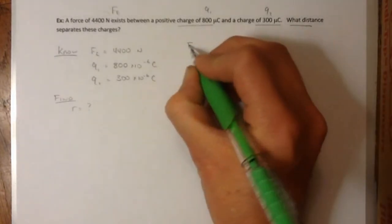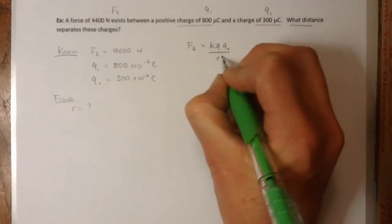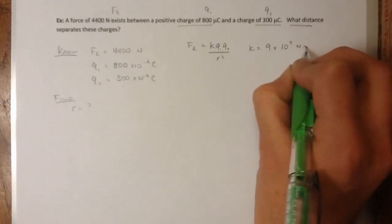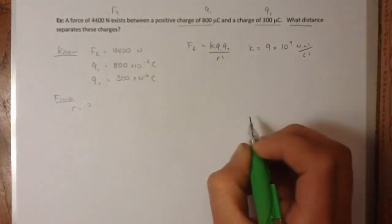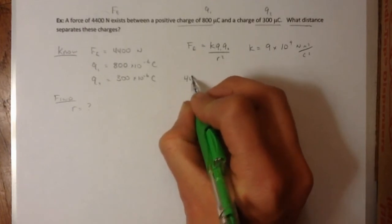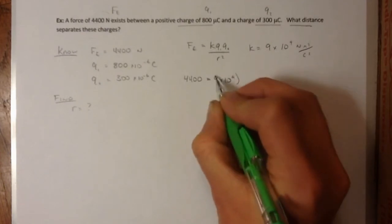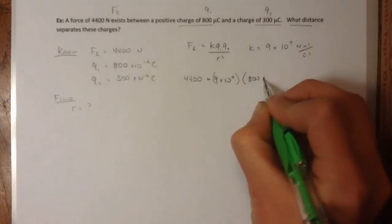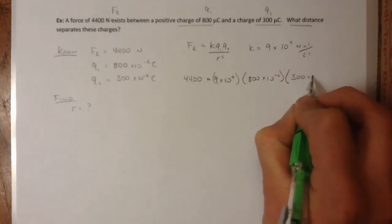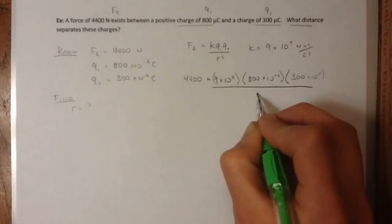Now, I know Coulomb's Law. Coulomb's Law says that KQ1Q2 over R squared. And I know that K is always 9 times 10 to the 9 newton meters squared per coulomb squared. So I can just go ahead and plug in my quantities. And I have 4,400 equal K. So 9 times 10 to the 9 times Q1, 800 times 10 to the negative 6. And then 300 times 10 to the negative 6. And that's all going to be over R squared.